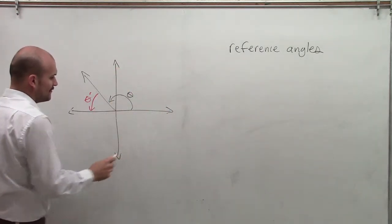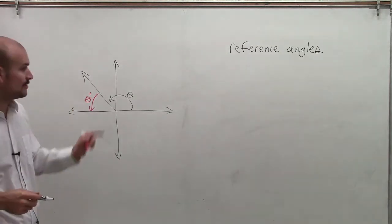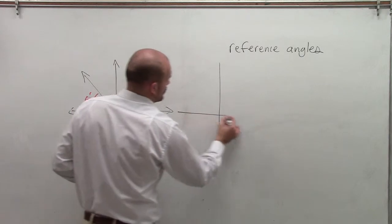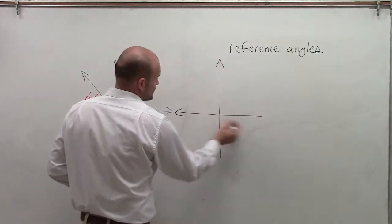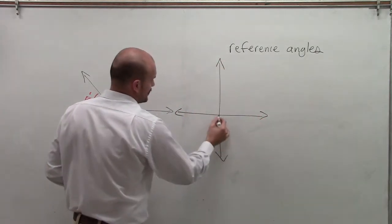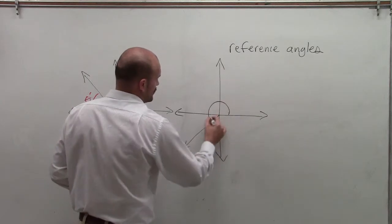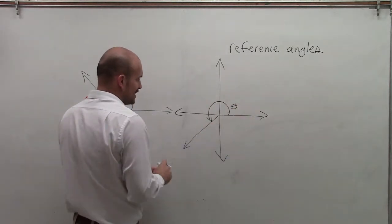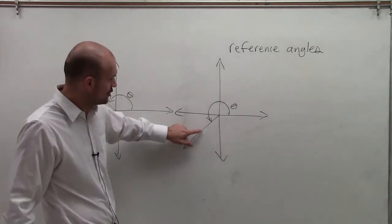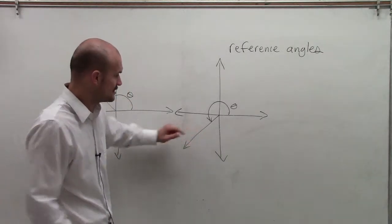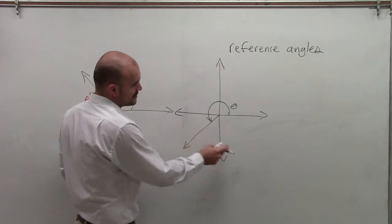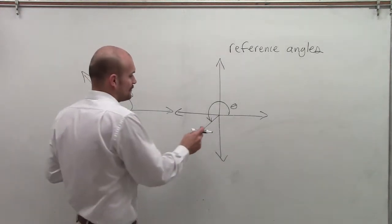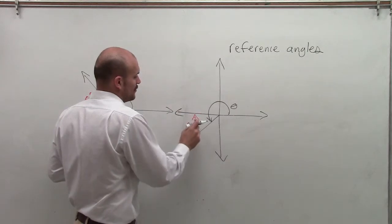Here's a reference angle for an angle in the second quadrant. And here is a reference angle for an angle in the third quadrant. There's your angle — initial side, terminal side. The acute angle from our terminal side to our horizontal axis: we could go either direction from the terminal side, but since it must be an acute angle, this is going to be our reference angle.